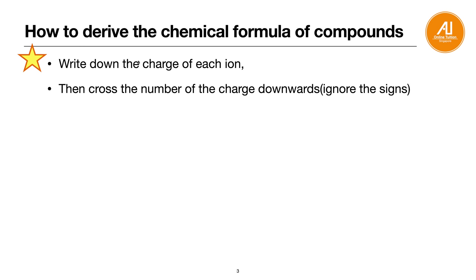So how do you derive the chemical formula of a compound? The trick is you need to write down the charge of each ion, and then you cross the number of the charge downwards, ignoring the sign. I'll go through some examples.